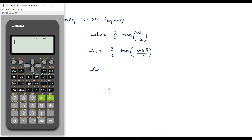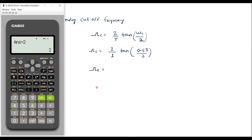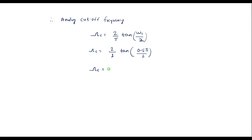Let me simplify this. First, 0.5π divided by 2 equals π/4, and tan(π/4) = 1. So Ωc = 2 × 1 = 2 radians per second. This is the analog cutoff frequency, calculated with the help of the given digital cutoff frequency.